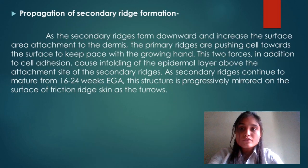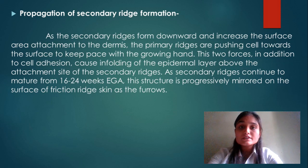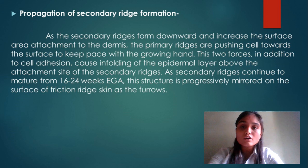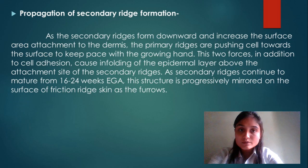Propagation of secondary ridge formation: as the secondary ridges form downward and increase the surface area of attachment to the dermis, the primary ridges are pushing cells towards the surface. These two forces, in addition to cell adhesion, cause infolding of the epidermis layer above the attachment side of the secondary ridges. As secondary ridges continue to mature from 16 to 24 weeks EGA, this structure is progressively mirrored on the surface of friction ridge skin as the furrows.